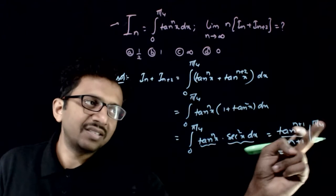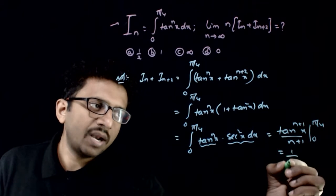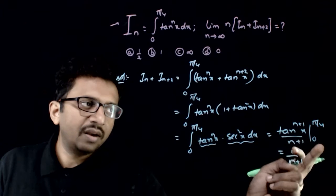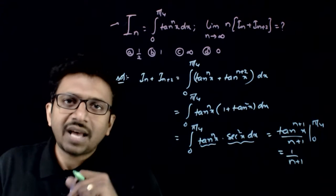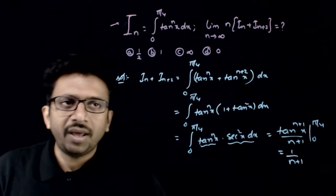Which is equal to, if you put x equals pi by 4, you get 1 by n plus 1, and if you put x equals 0, you get 0. So effectively I_n plus I_(n+2) is nothing but 1 by n plus 1.